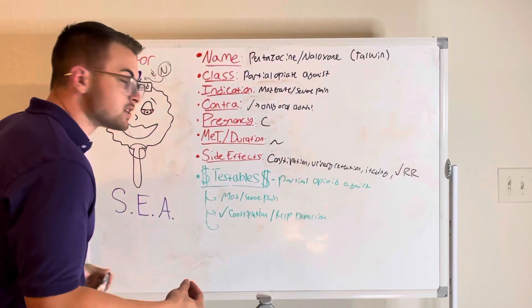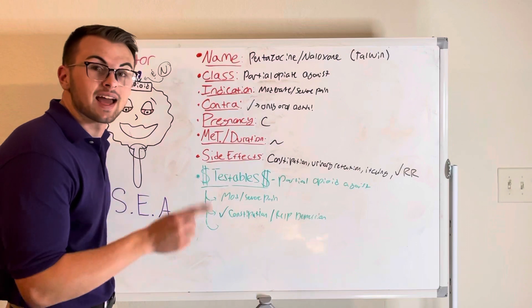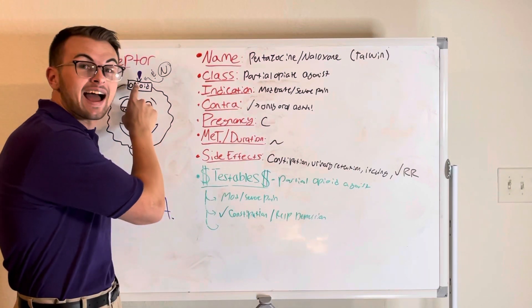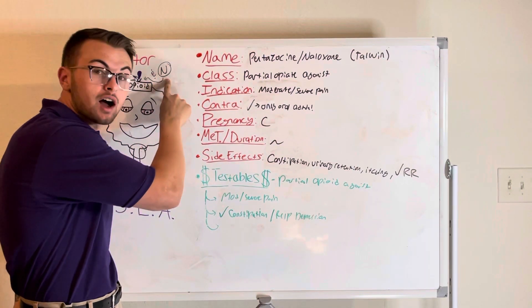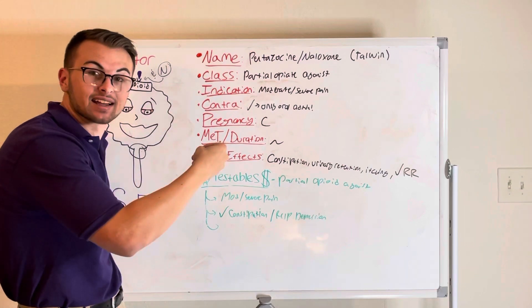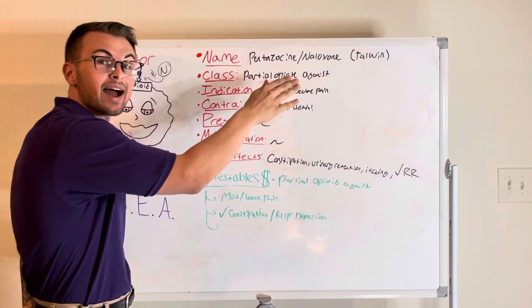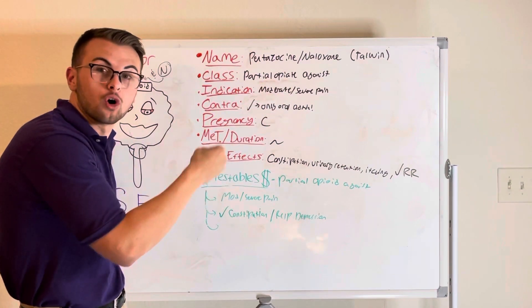Now what we need to know is that pentazosine acts as an opiate agonist while naloxone acts as an antagonist. Therefore Talwin is a partial opiate agonist.